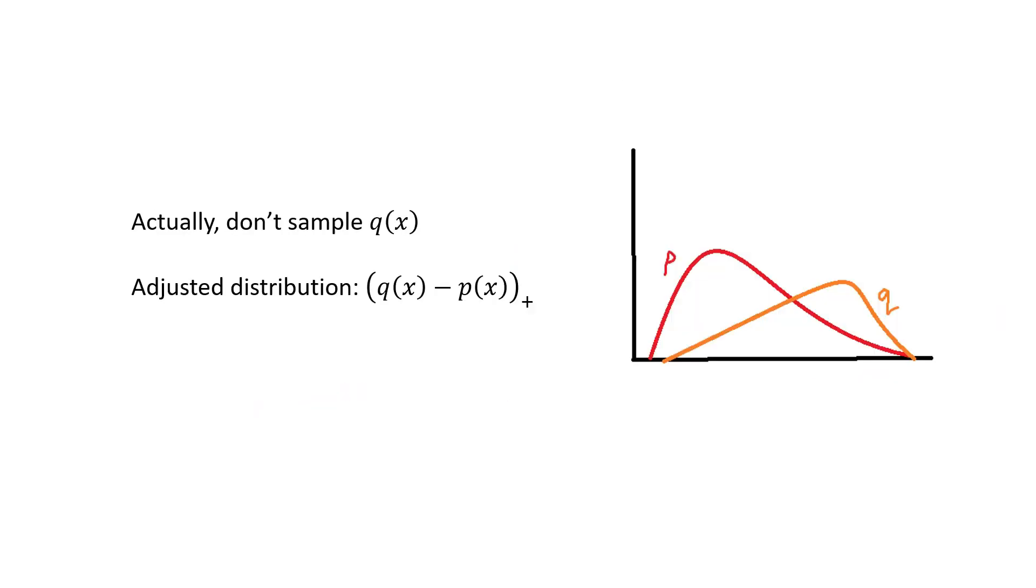Actually, the last part is not quite accurate because we don't actually sample q(x). For the last token, we actually sample from an adjusted distribution (q(x) - p(x))+. This just means that we subtract the token probabilities across two distributions and ignore any part where the subtraction will cause the probability to be negative. So here, any of all of these parts will be left out. And we are basically sampling from this region here, the difference between q minus p.